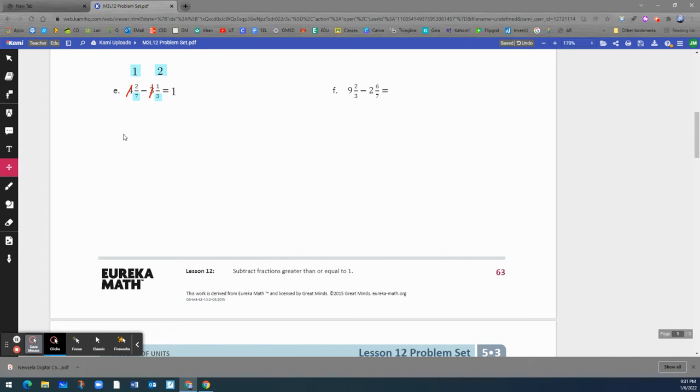Now we have two fractions. We have two sevenths, two sevenths, and we also have one third. And notice that they both have a different denominator. So what we do, we multiply the two sevenths times the denominator, the opposite denominator.